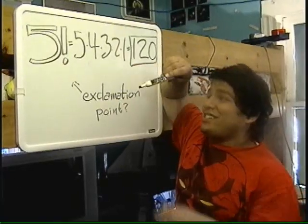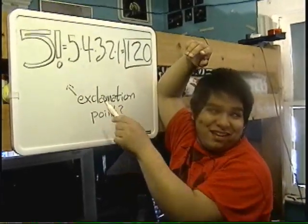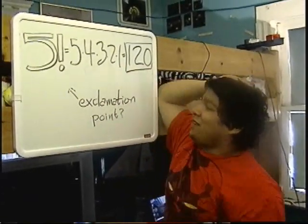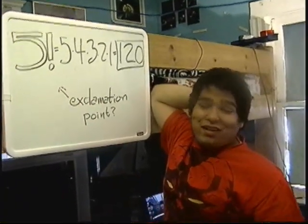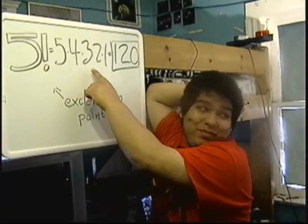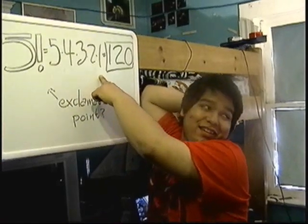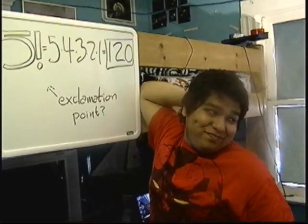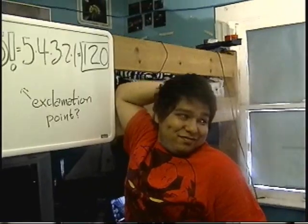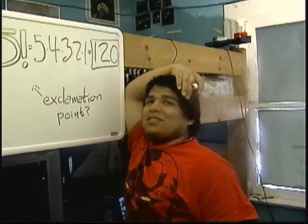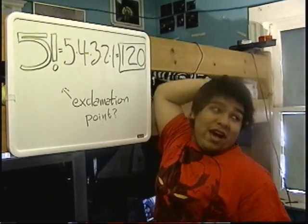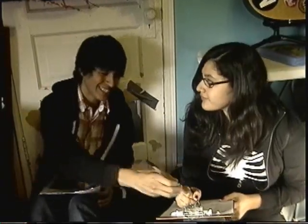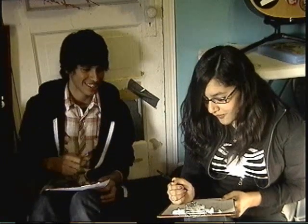The professor explains the exclamation point: five factorial means five times four times three times two times one, which equals one hundred twenty. A student asks if it's called 'bi-factorial' — the professor says no. The student confirms they understand.